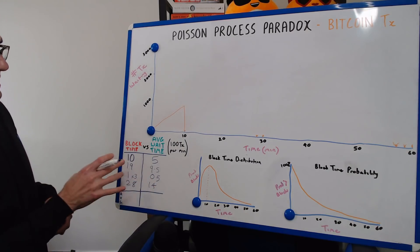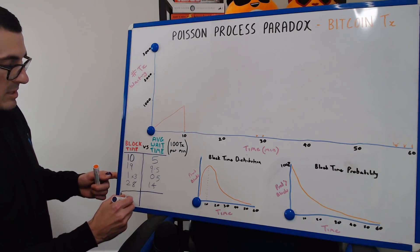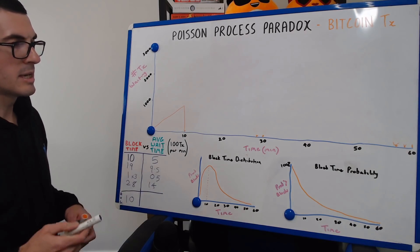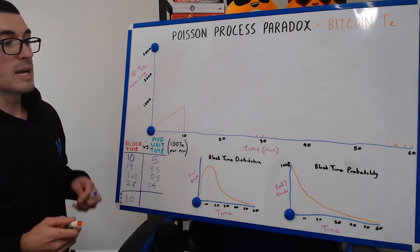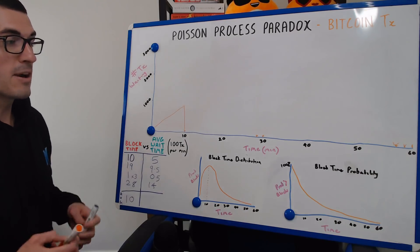So when we add these up and divide them by six, we know that the average block time was 10 minutes. So why does the average wait time feel a lot longer in real life? And this is where it gets into these Poisson processes and how the paradox plays out.